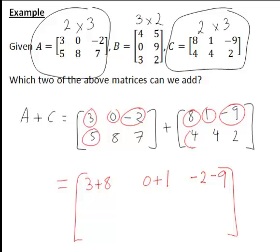Similarly in the second row, first column, 5 plus 4, second row, second column, 8 plus 4, and second row, third column, 7 plus 2.